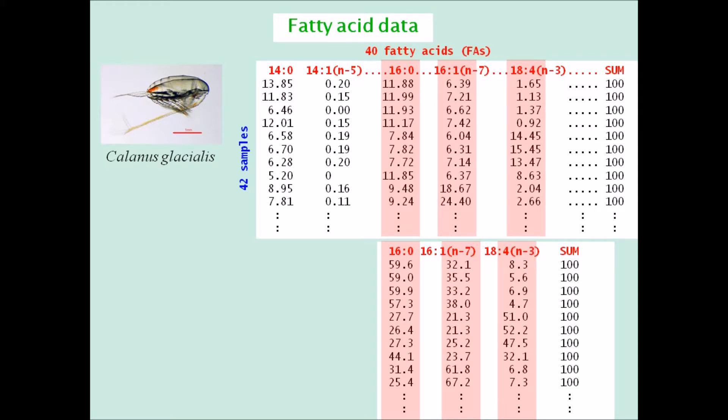Now, what does stay constant are the ratios between the fatty acid values. For example, the ratio between 16.0 and 16.7 for the first sample is 1.86. In the subcomposition, even though the numbers are different, the ratio is still 1.86.